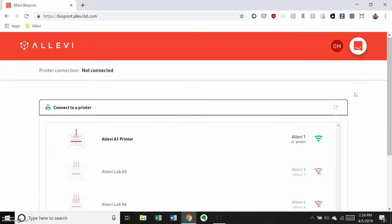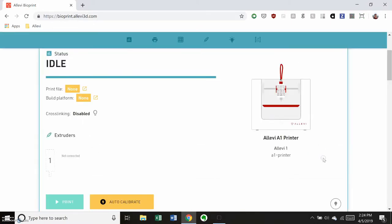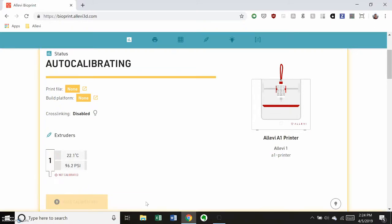In the Alevi software, select and connect to your bioprinter. First, click auto calibrate. This lets the printer determine the x, y, and z coordinates of the tip of the needle.